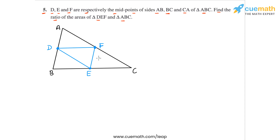We have to find the ratio of areas of the small triangle DEF and triangle ABC. Let me first describe the logic we will use to solve this problem. We will use the midpoint theorem and we will show that this small triangle DEF is similar to the big triangle ABC.